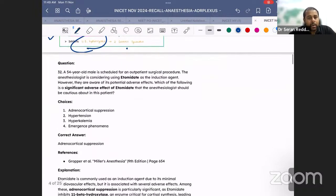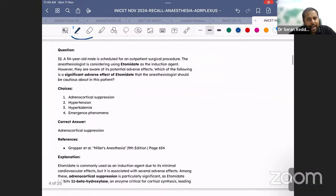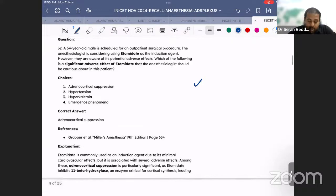This has been discussed in our workbook. A similar question has been in our question bank also - a 54-year-old male scheduled for outpatient surgical procedure. The anesthesiologist is considering etomidate as an induction agent. However, they are aware of its potential adverse effects. Which of the following is a significant adverse effect? The answer is adrenocortical suppression. We are able to get 100% of the questions from the workbook.